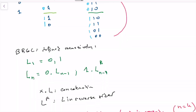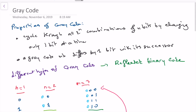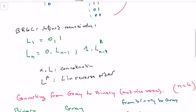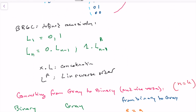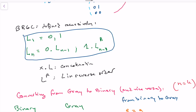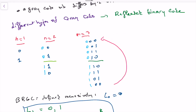The second solution uses the recursive formula from that gray code video explanation. We said that L1 is [0, 1], and L0 is just [0] as the problem states. Then L_n is formed by concatenating 0 with the previous sequence L_{n-1}, and adding to that 1 as a first value concatenated with the previous sequence reversed.